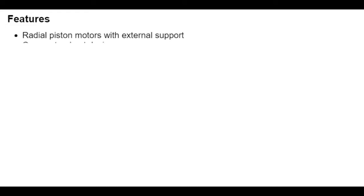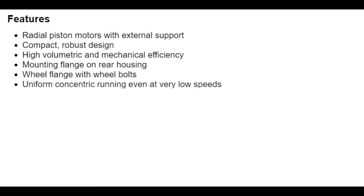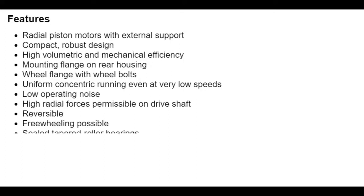Radial piston motors with external support are compact and robust, and have high volumetric and mechanical efficiency. The mounting flange on the rear housing allows the motor to be installed directly on the vehicle chassis. The wheels can be mounted directly to the wheel flange with wheel bolts. Uniform concentric running even at very low speeds, low operating noise, and absorption of high radial forces on the driveshaft are other benefits of the MCR motor. It is reversible — it can rotate clockwise and counterclockwise — and freewheeling switching is possible. Sealed taper roller bearings keep out dirt and dust and ensure maximum reliability.